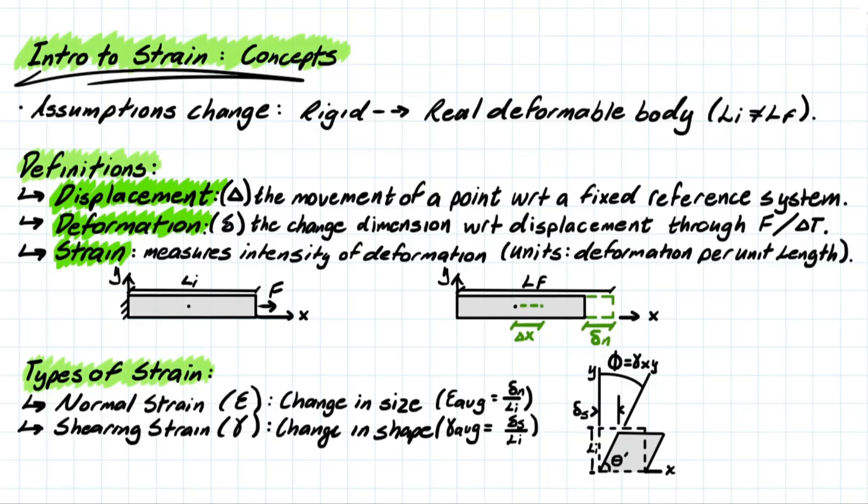Now, what is deformation? Deformation is represented by this funny symbol, which, funnily enough, is actually represented by delta as well, just drawn in a different way. So consider this as the difference and consider this as delta. So delta is going to be the change in dimension with respect to displacement through changes in force or temperature applied to the element.